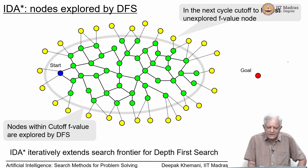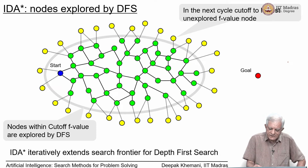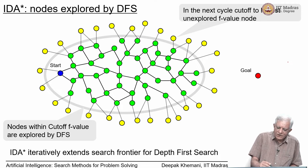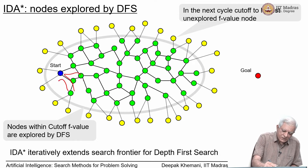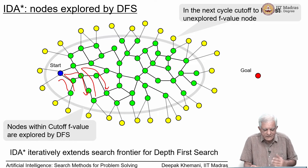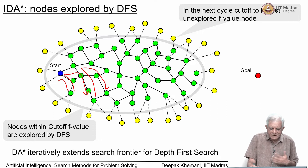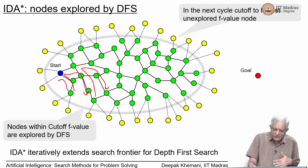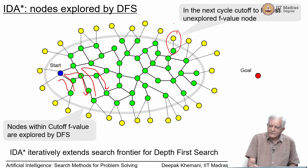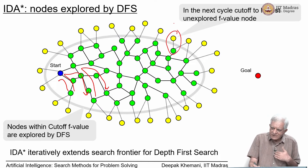At any given cutoff — shown by a gray oval — IDA* explores all nodes within that oval in a depth-first fashion, going down one path, backtracking, going down another, and so on. In the next cycle it extends the boundary to the next closest node and does another depth-first search. In this fashion it iteratively expands the search distance.